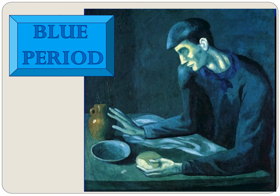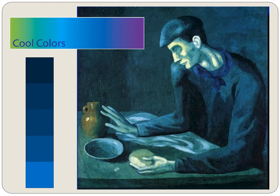Look closely. You may notice that the man's fingers nervously reach out for the pitcher on the table — that's because the man isn't sure where the pitcher is on the table. The title of this painting is The Blind Man's Meal. The main color in this painting is blue. When Picasso was feeling blue, he painted with blue.